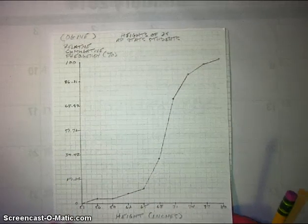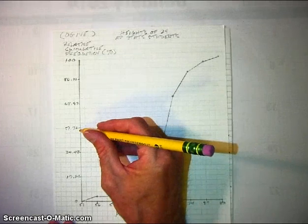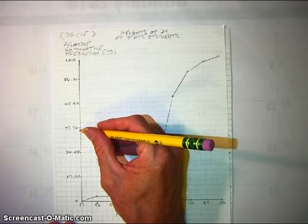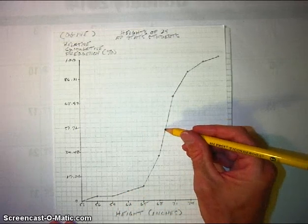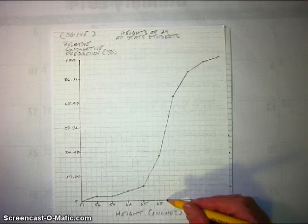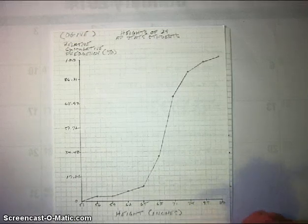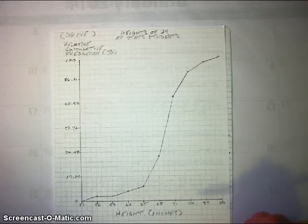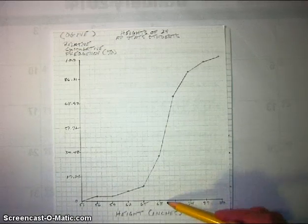For instance, say you want to find the median of this distribution. 50% is right about here — that's the 50th percentile, which corresponds to the median. Go straight across to the ogive, hit it about here, then go down, and you're going to be at about 69.5 inches — that would be the approximate median. That is not the exact median in this data set, because we have 29 observations and all the data values are whole numbers, so it's not exact, but it's close.